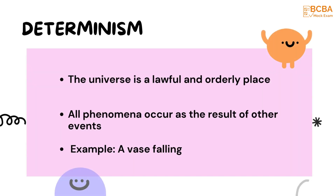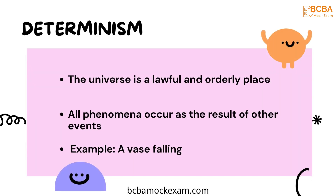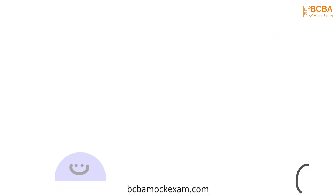The first assumption is determinism. It's the belief that the universe is a lawful and orderly place, and all phenomena occur as the result of other events. An example of determinism is that there is an explanation for a vase falling off the shelf, even though no one is around it.